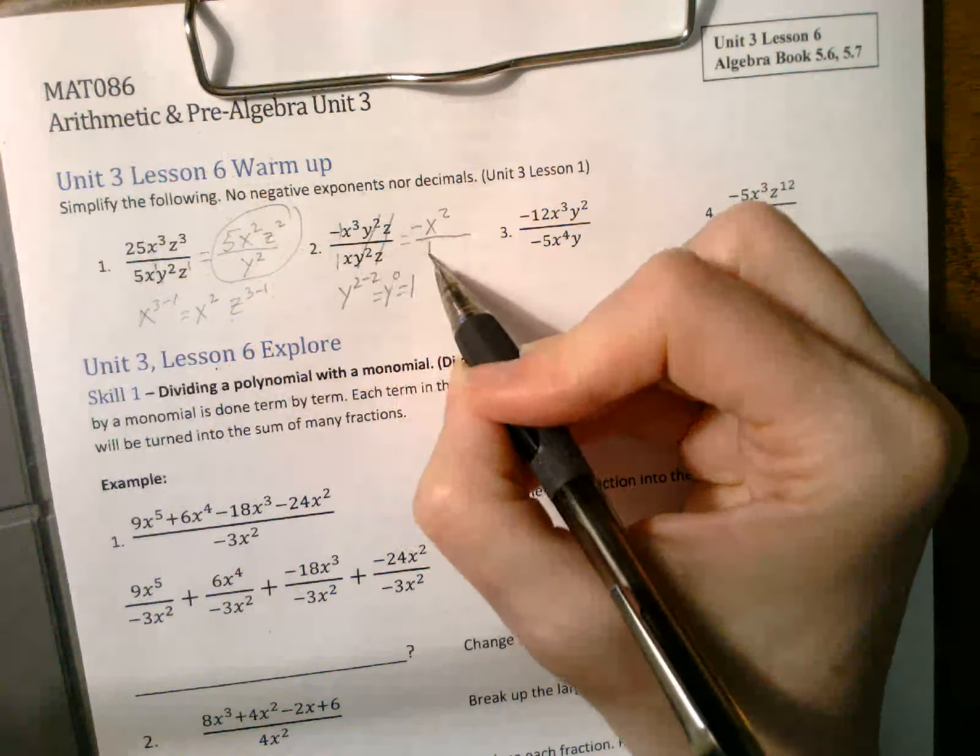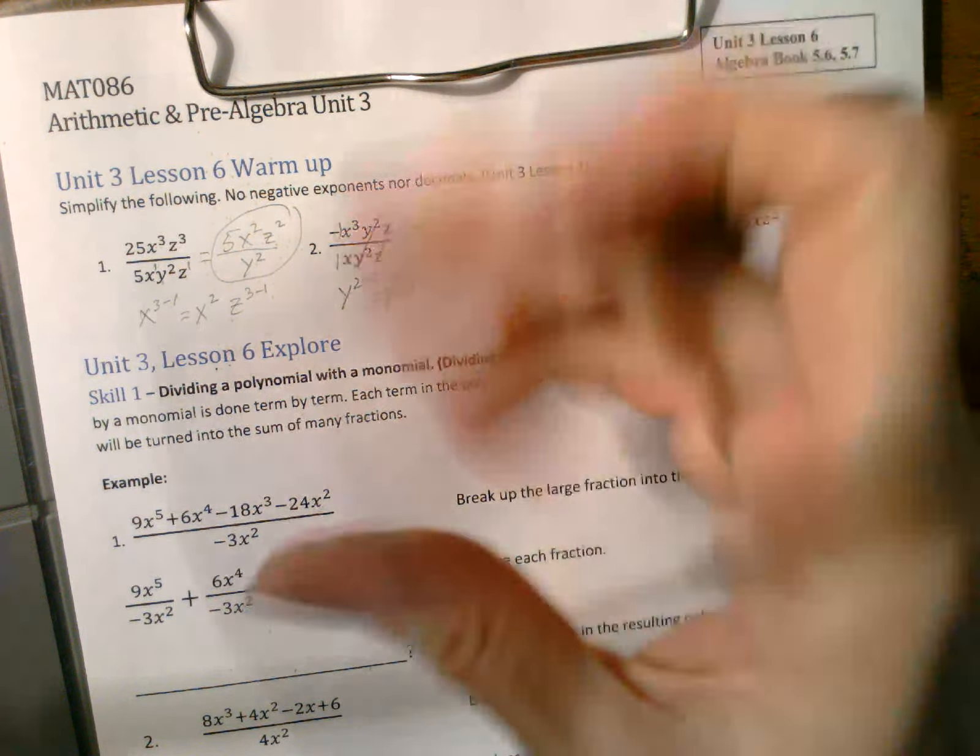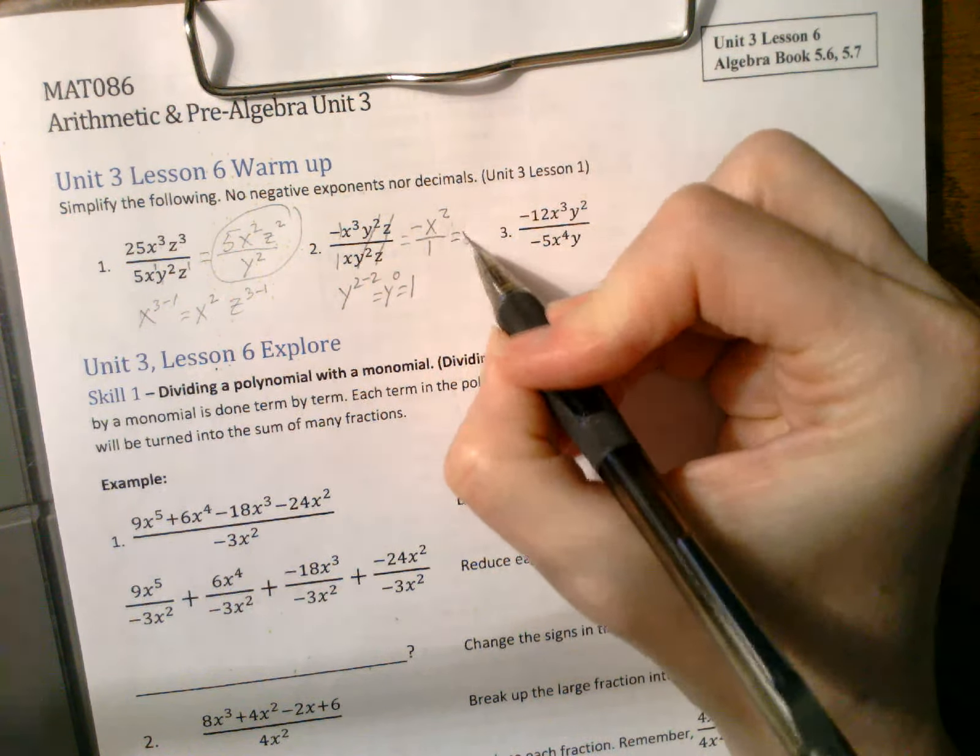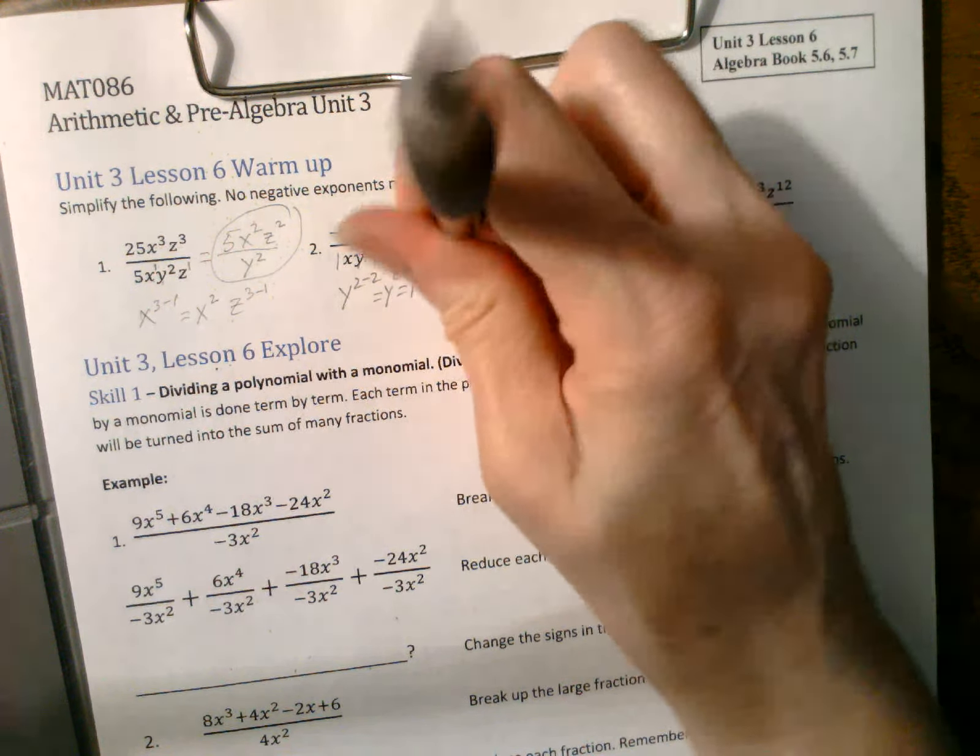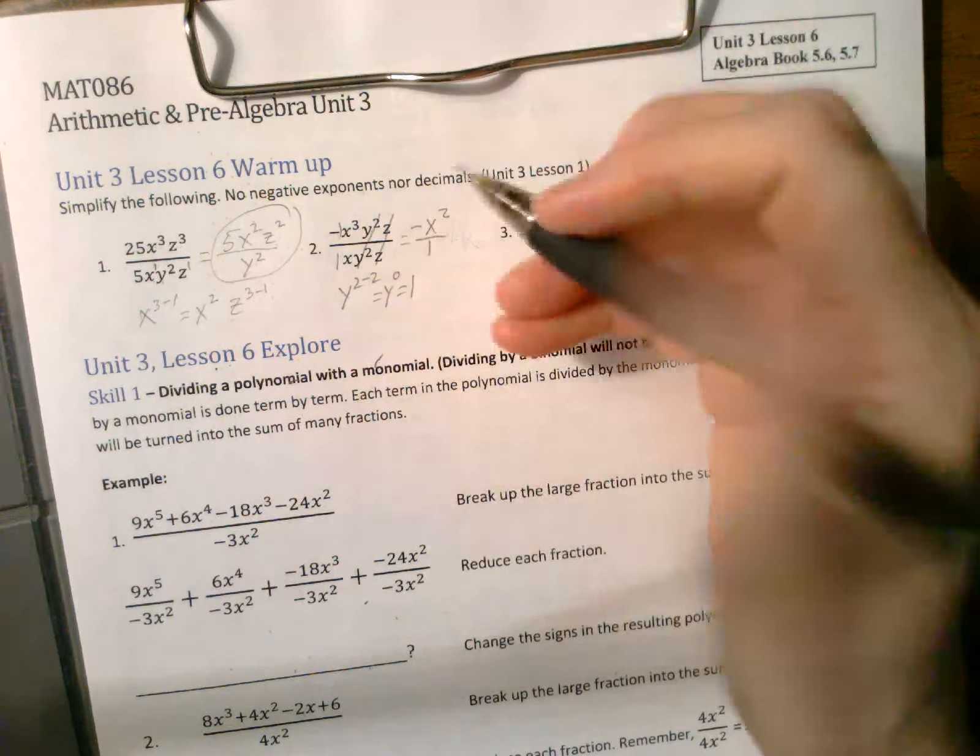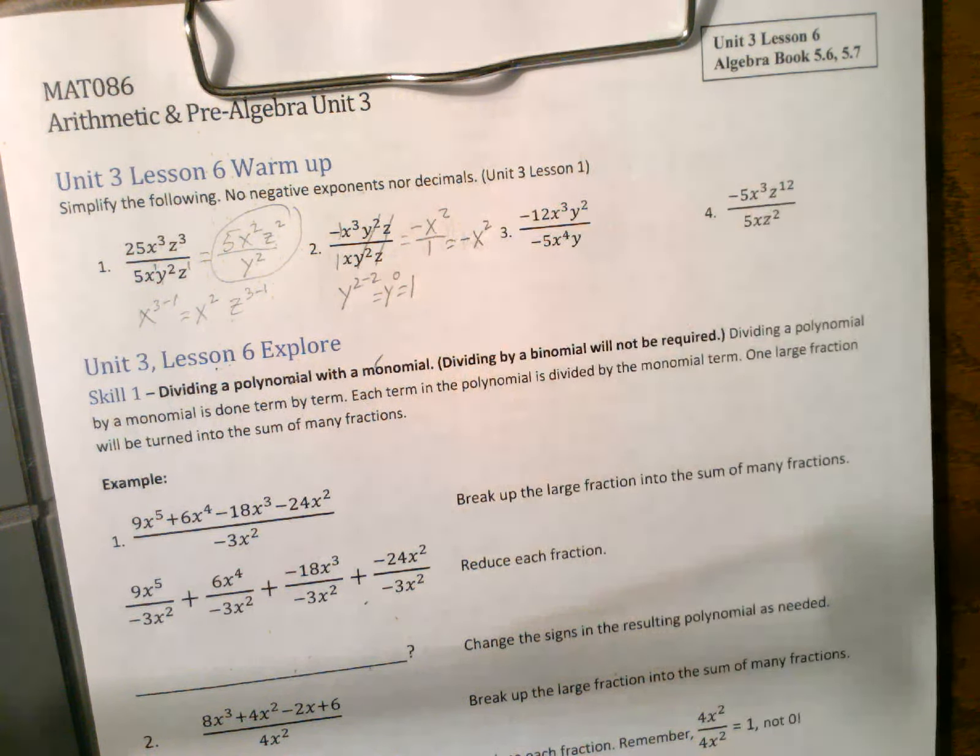And same with the z's. You can just reduce them away. This was on top. So that means our final answer isn't a fraction anymore. It's just negative x squared.